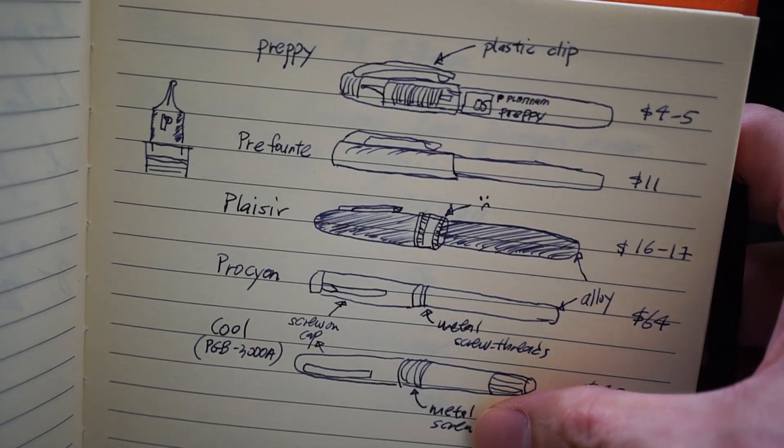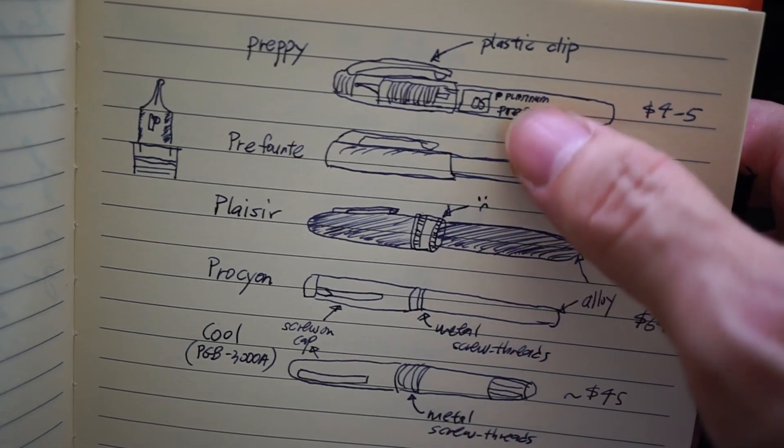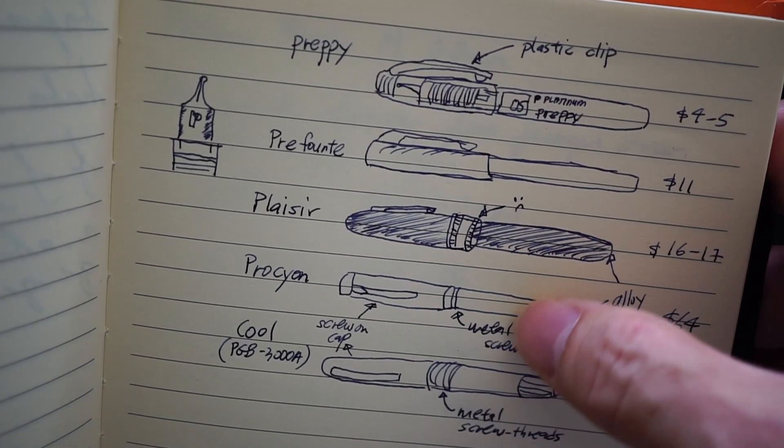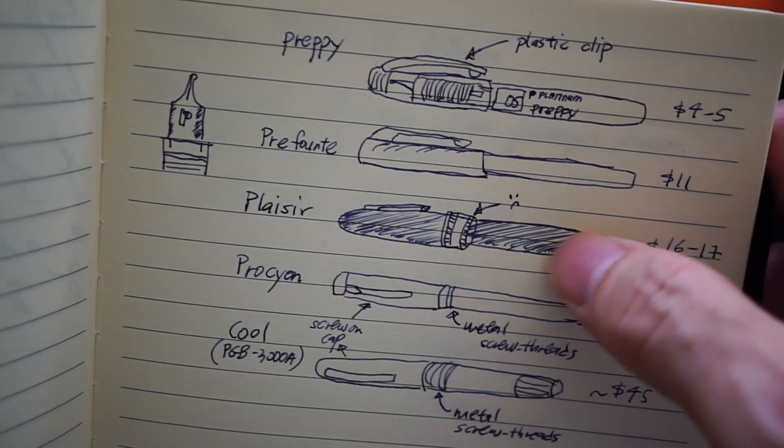Other characteristics, obviously the main one would be the Preppy has a plastic clip whereas the rest of the pens have, strangely enough, all of them have different designs of clip and they're all metal obviously.